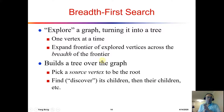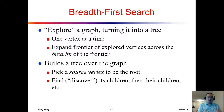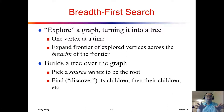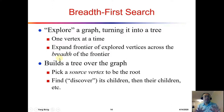The strategy for exploring a graph and turning it into a tree is to visit one vertex at a time, then expand the frontier of explored vertices. We expand across the breadth of the frontier — this is called breadth-first search, or BFS.